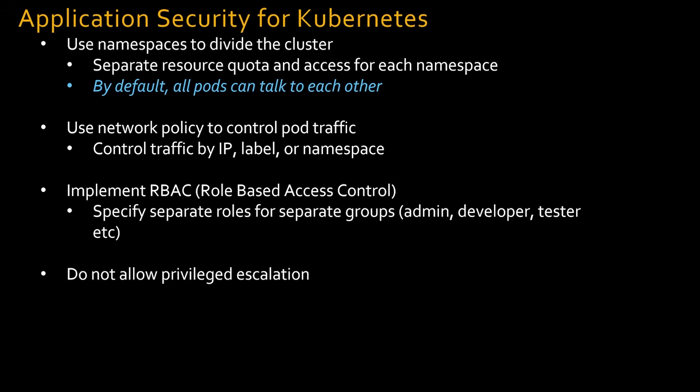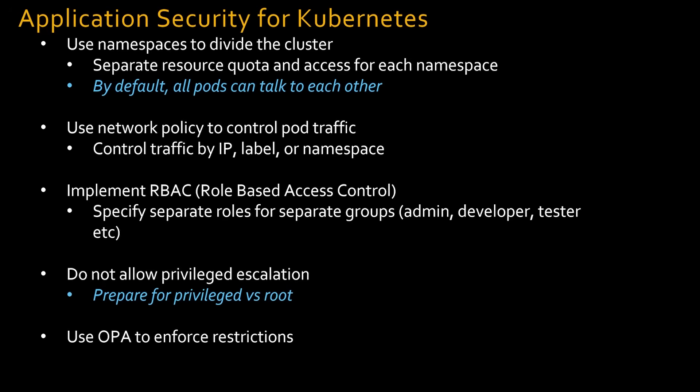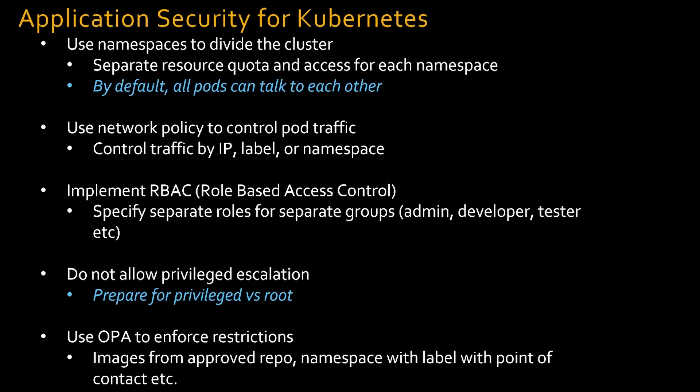Do not allow privileged escalation — prepare for questions on privileged escalation versus root access. Use OPA — Open Policy Agent — to enforce restrictions. OPA will ensure that images are coming from an approved repository. And if you have namespaces, namespaces should have a label with a point of contact in case something goes wrong. The point is, have one application ready in your head.